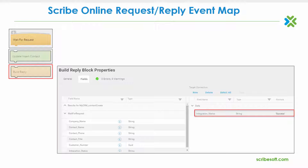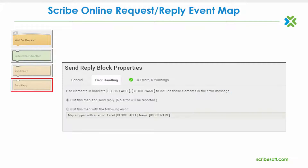Now that our build reply control block is configured, the final step in our mapping design is ready. The send reply control block is used to provide closure to the prior build reply block. This block causes the ScribeOnline solution to exit the current map immediately and either continue to the next map or exit the solution with a customizable error.